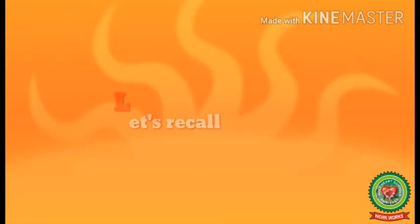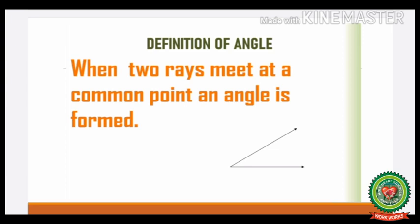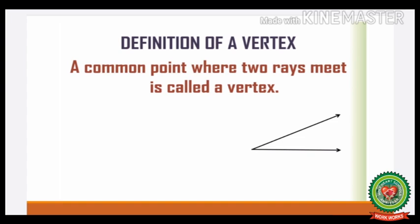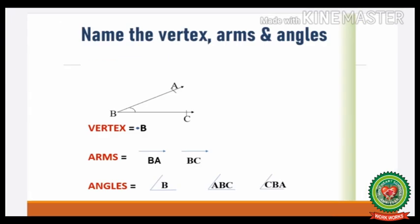So let us recall what we have learnt today. We discussed the definition of angle: when two rays meet at a common point, an angle is formed. The definition of vertex: a common point where two rays meet is called a vertex. We also identified the vertex, arms, and names of the angles. In the figure, B is the vertex, arms are BA and BC, and the angles formed are angle B, angle ABC, and angle CBA.